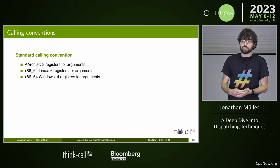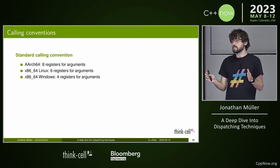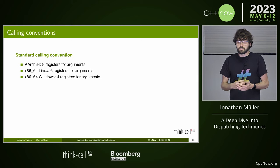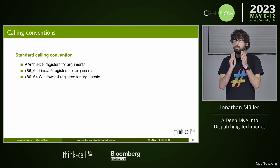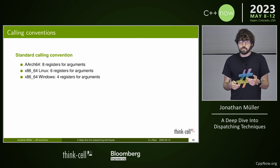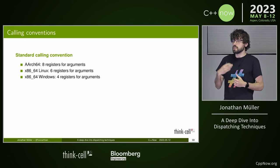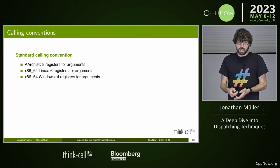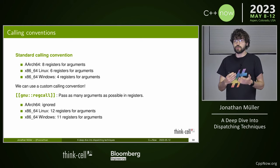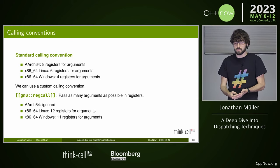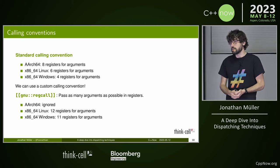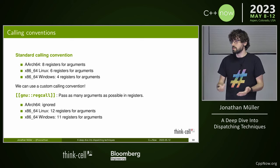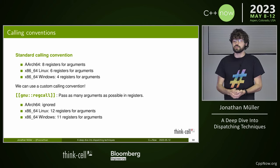The standard calling convention on ARM64 gives us 8 registers; on x64 Linux, only 6; on Windows, only 4. However, we don't need the standard calling convention since we're the only ones calling these functions. We can ask the compiler for a different convention: gnu_regcall, which passes as much as possible in registers — giving 12 registers on Linux, 11 on Windows, and nothing extra on ARM since it already has 8. We can annotate functions with gnu_regcall if we need more than 4 things in registers.